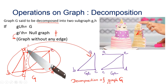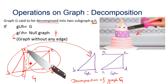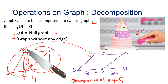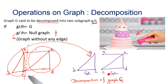The next operation is decomposition. Decomposition is simply splitting your graph into two halves. The graph G is said to be decomposed into two subgraphs G and H. Their union will be the original graph, and no edge will be common between the two subgraphs — the intersection of the subgraphs will be a null graph. For example, if I make a cut in this graph, it splits into graph 1 and graph 2.